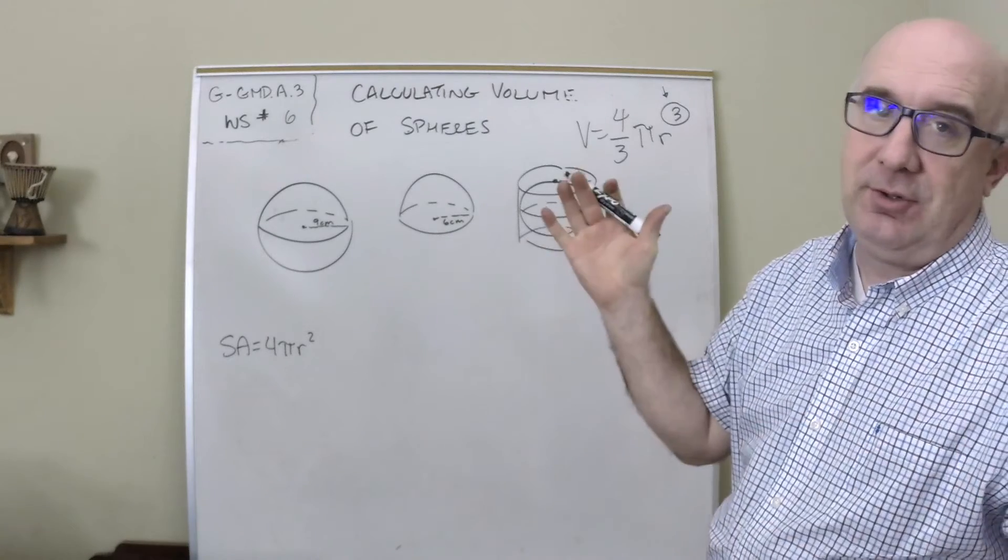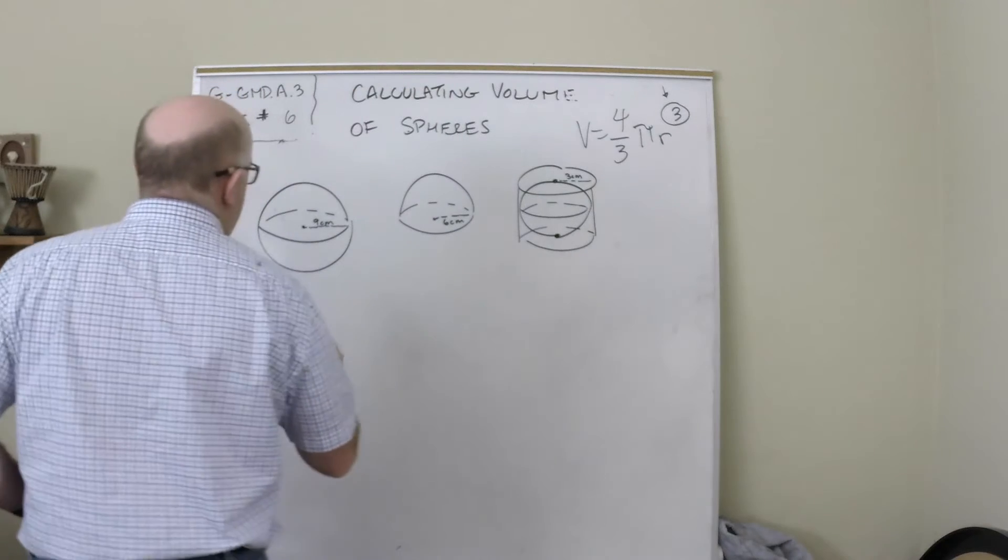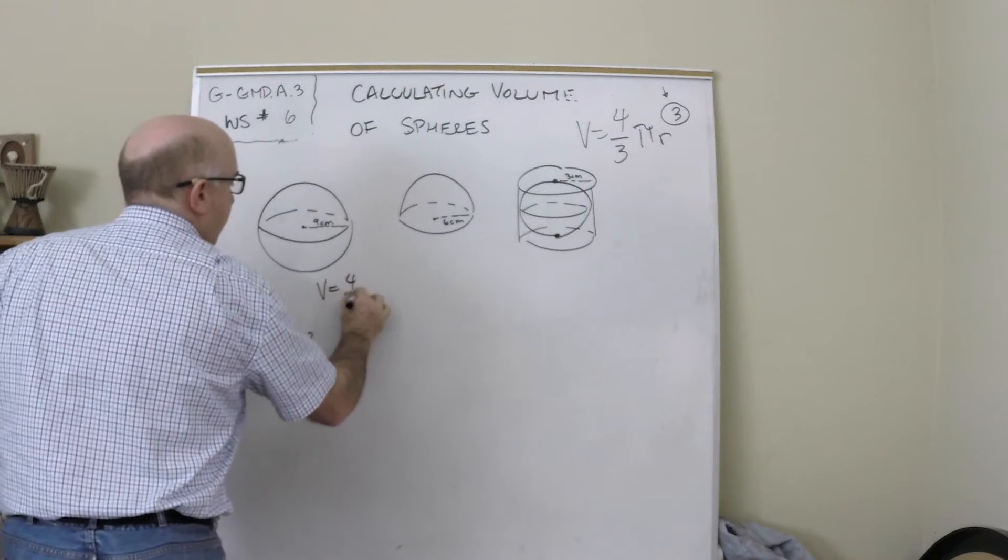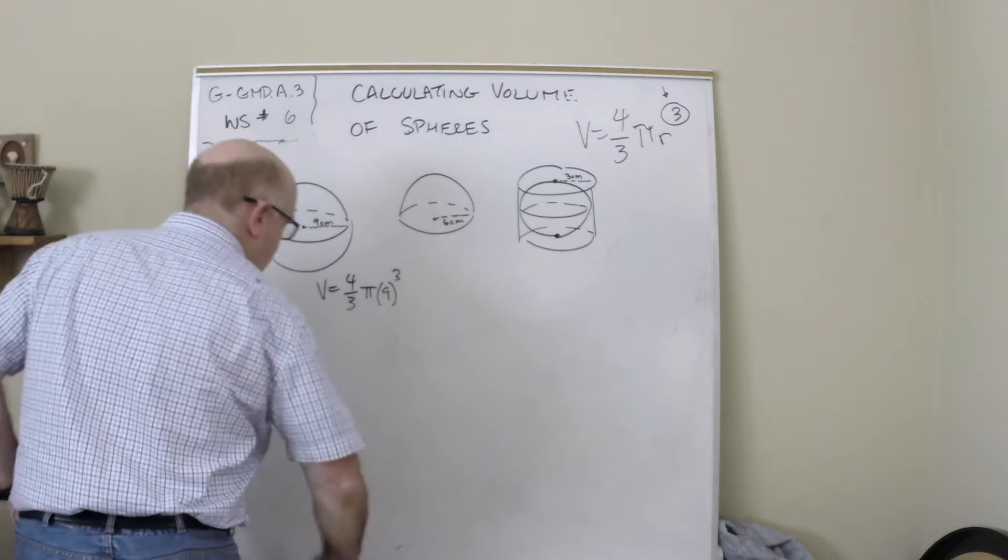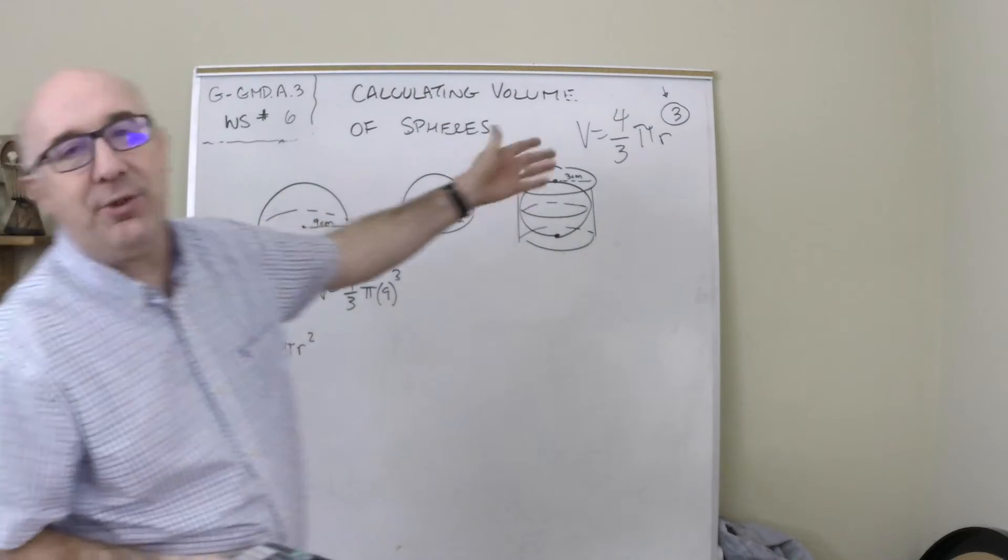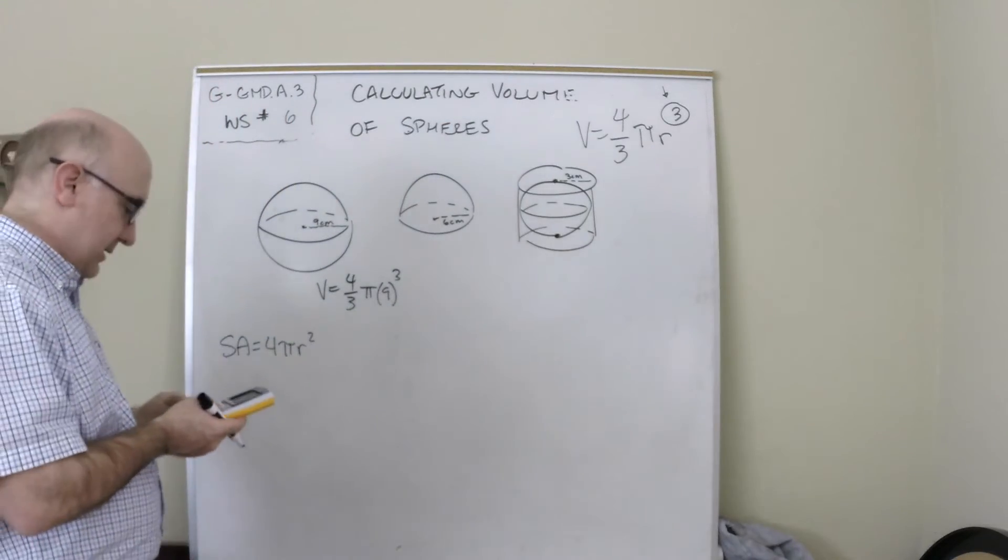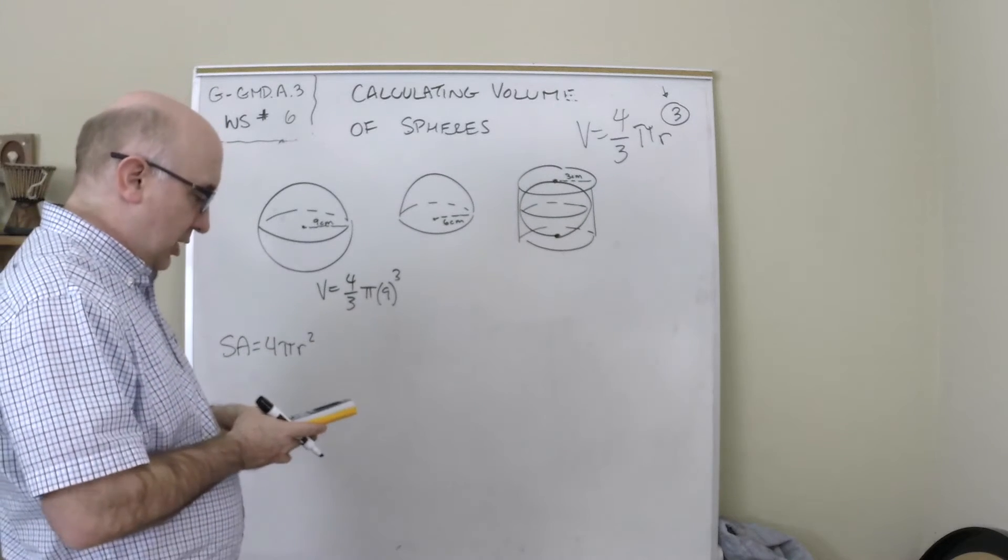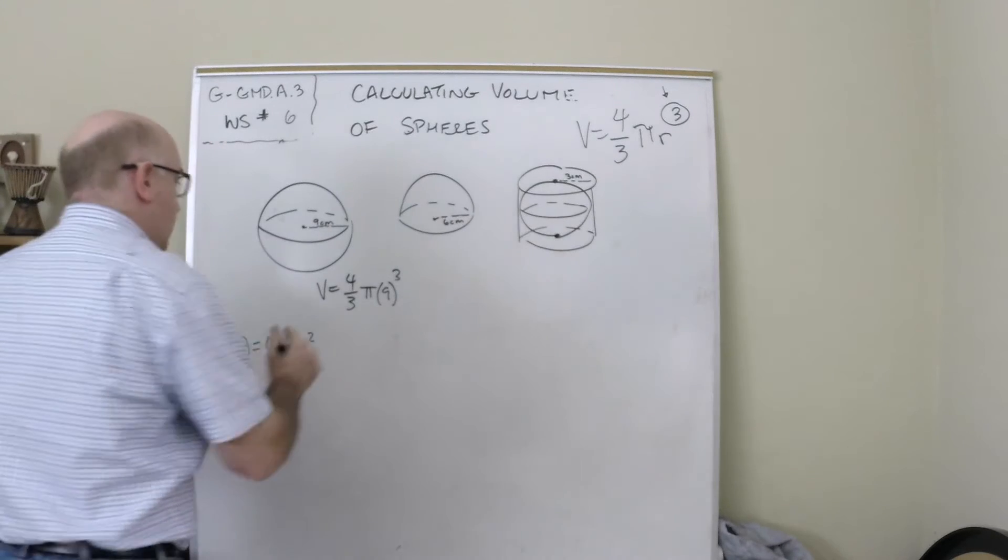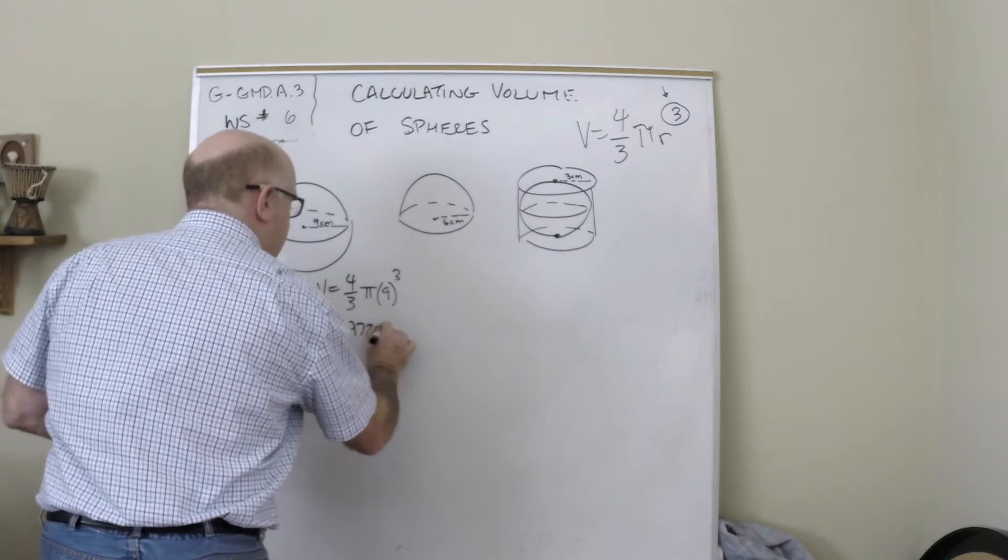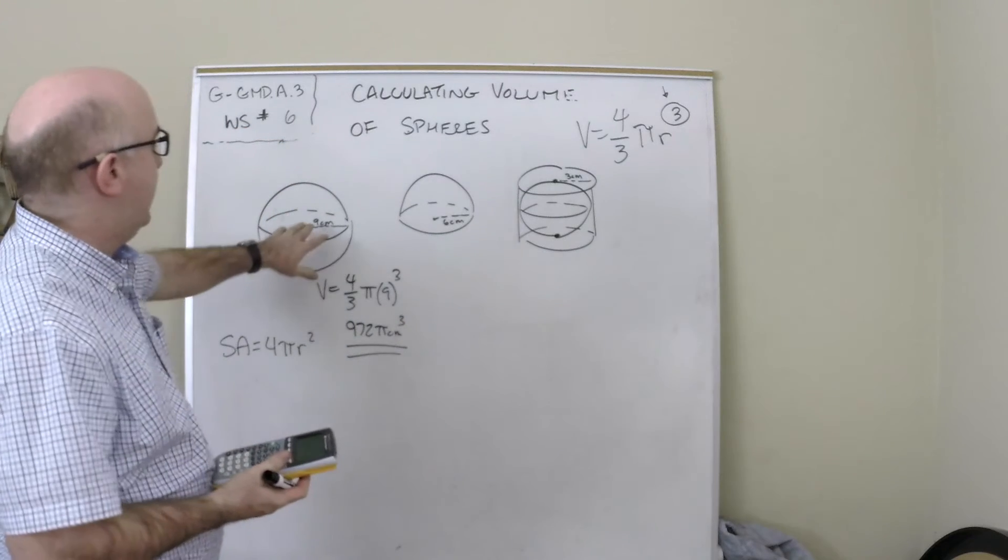Alright, so if you're calculating something like this one, it would go four-thirds πr³, and the only variable in the whole thing is r, so it's just a matter of finding r and then it's a done deal. Nine cubed times four divided by three is 972π centimeters cubed.